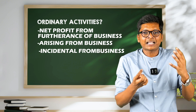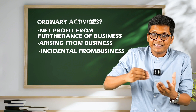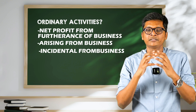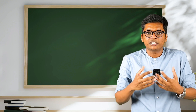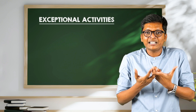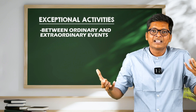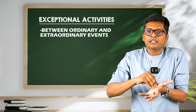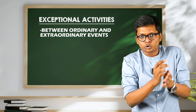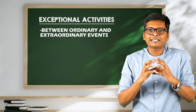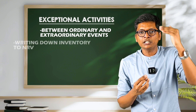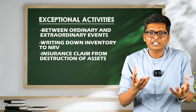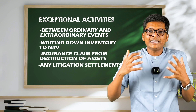Scrap sale or other income arising from or furtherance of business falls under ordinary activities. Even firing employees is for furthering the business, so this becomes an ordinary activity. The standard does not define a new term called exceptional. Exceptional activities sit somewhere between ordinary and extraordinary events — ordinary events but not classified directly under ordinary, and you can't put them in extraordinary either. The middle ground is exceptional items. Examples the standard gives include writing down inventory to NRV, insurance claim from destruction of assets, any litigation settlement, and any mergers.